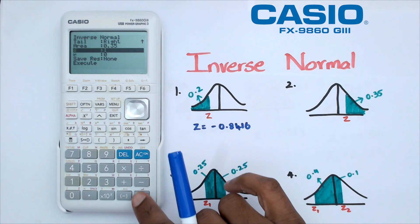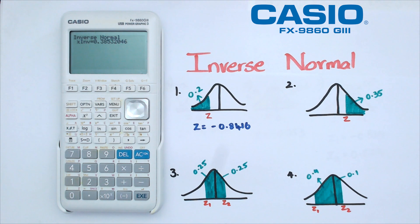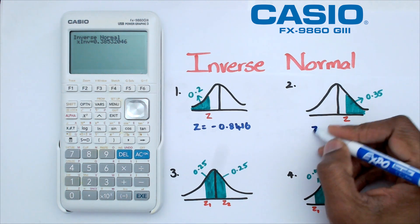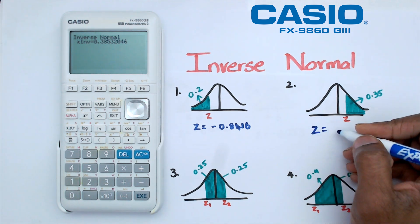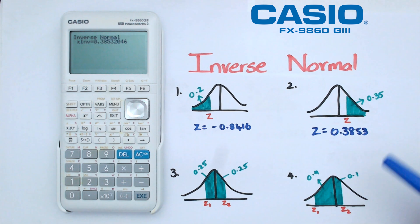When we solve this, we're going to get a z value here of 0.3853. Once again, we know that we're correct because 0 is right here and z is on the positive side of things. We've got 0.38, and that's pretty good for us.